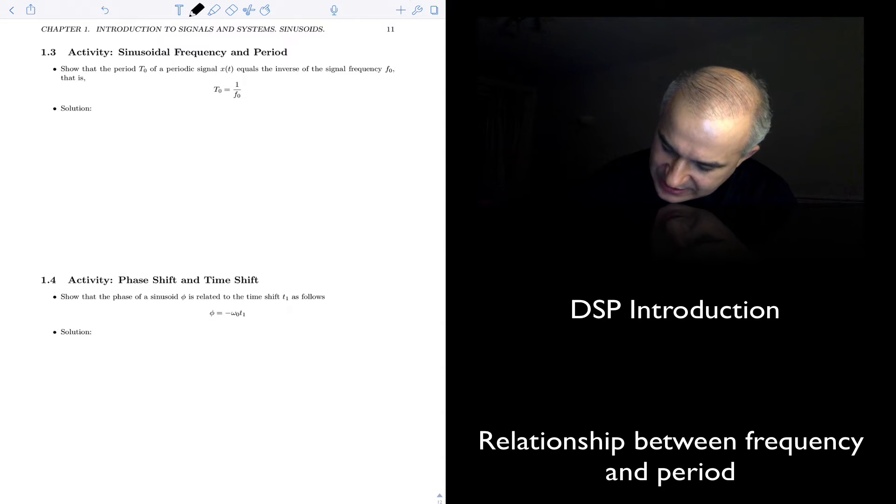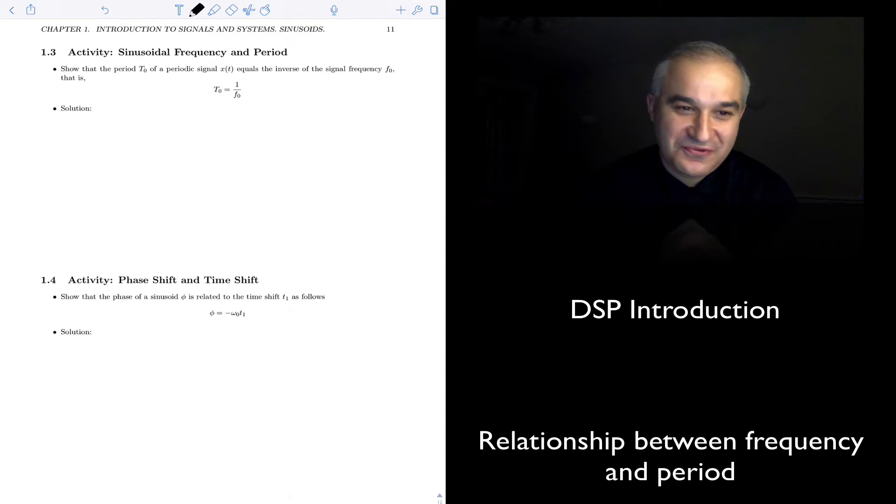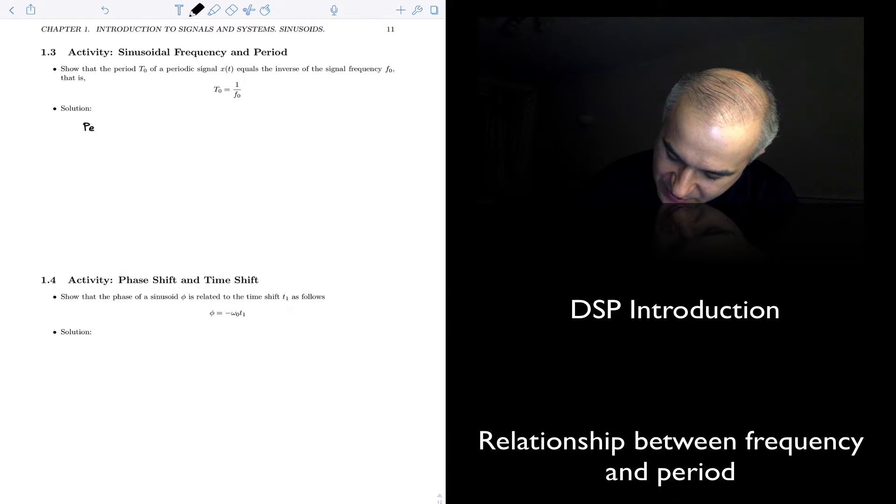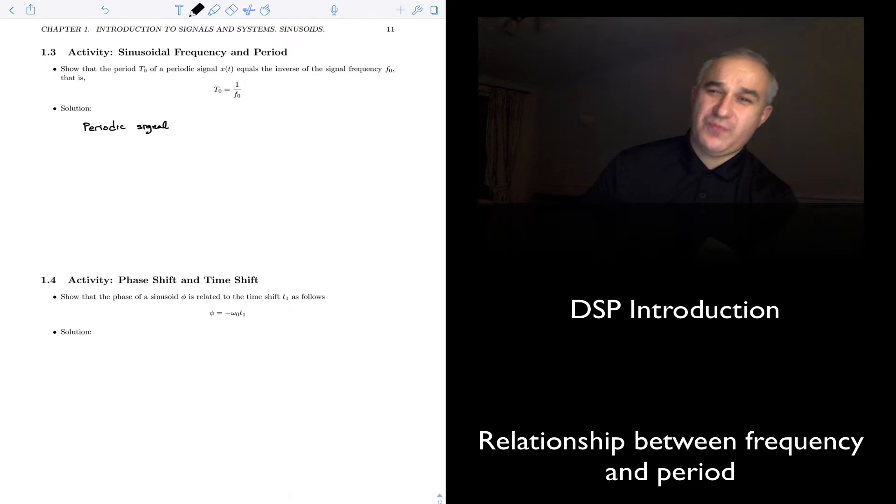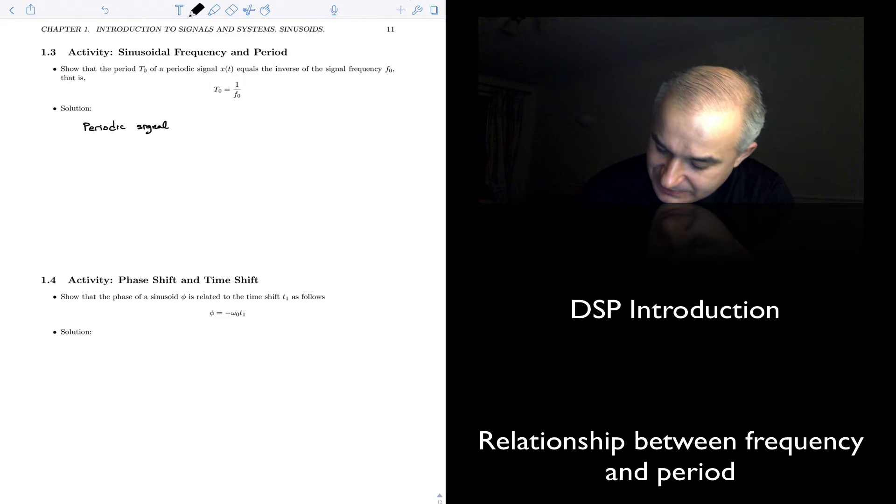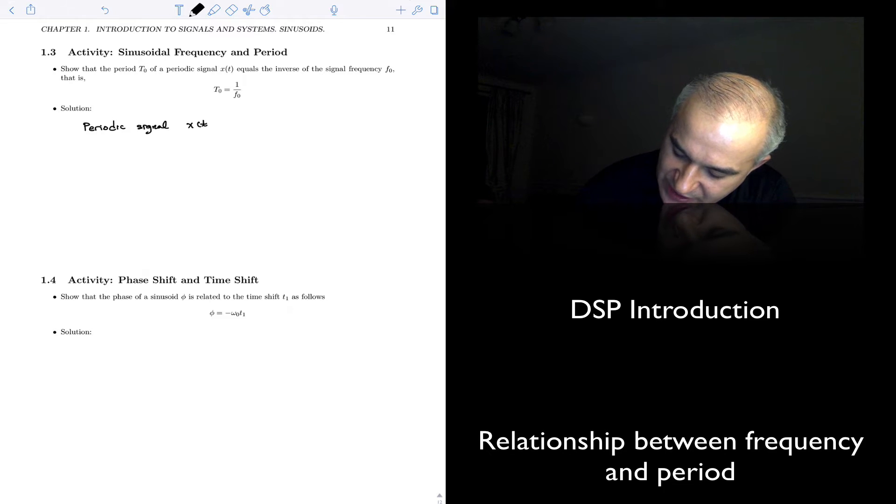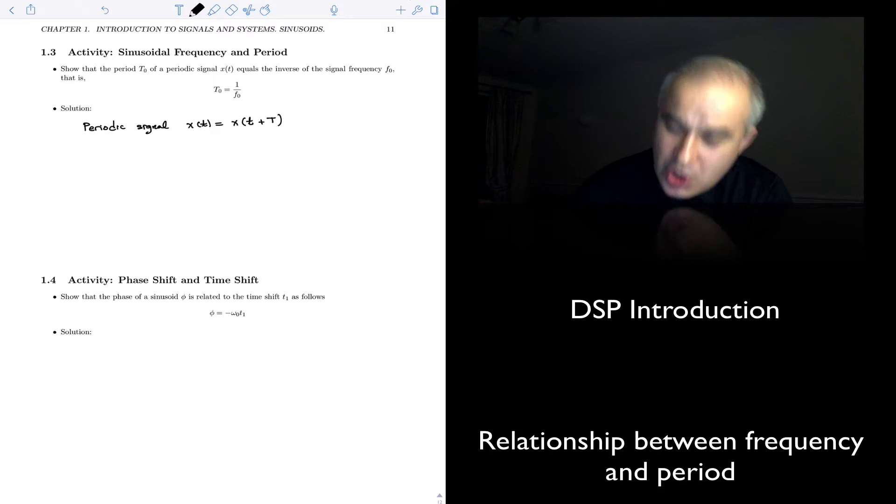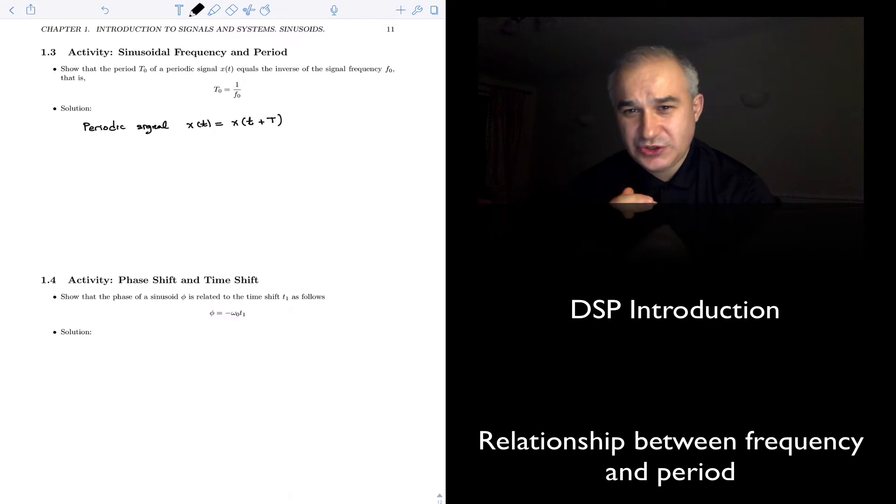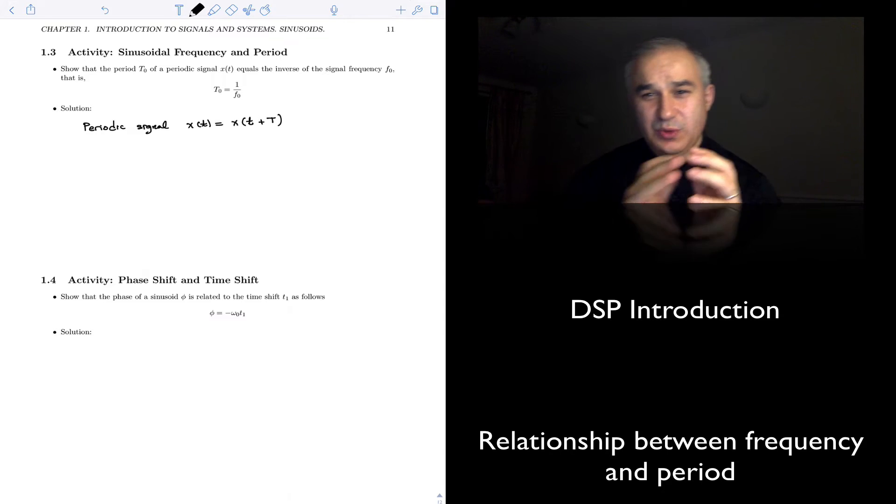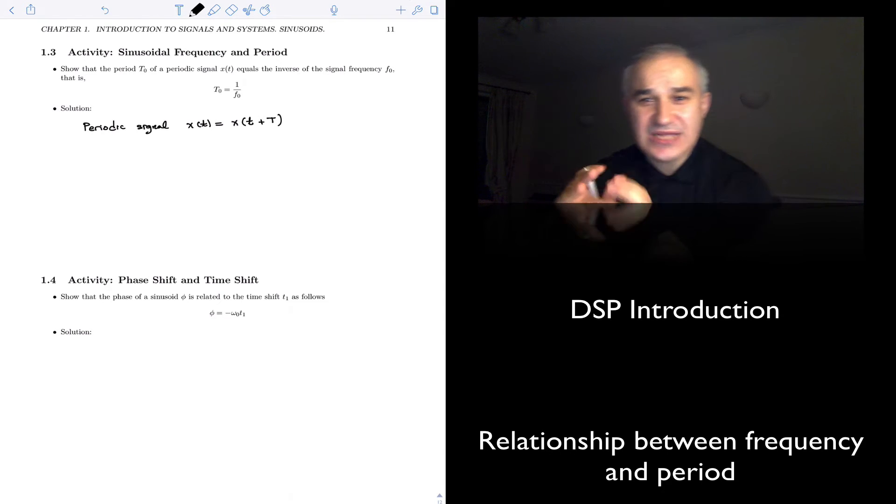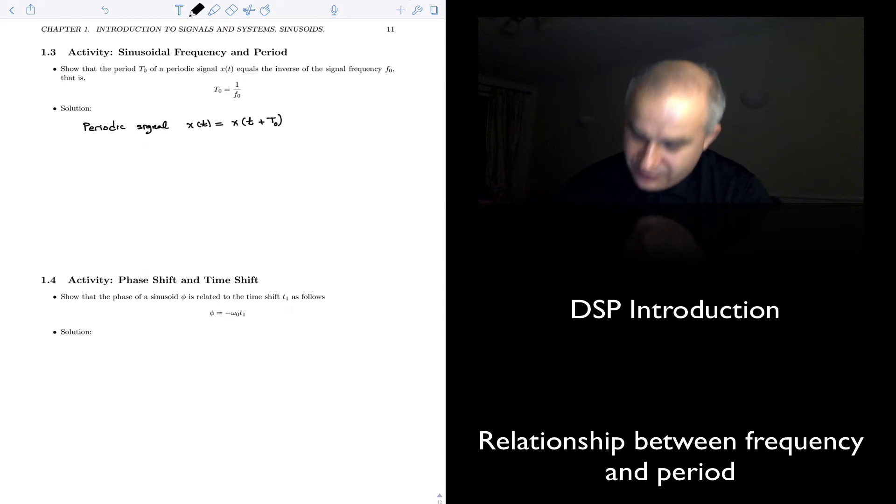So let's do that. Let's do an engineering proof. You think about a periodic signal. What is the definition of a periodic signal, mathematically? x of t is equal to some x of t plus some period. So there is a mathematical equality there between x of t and x of t with some period, t0.